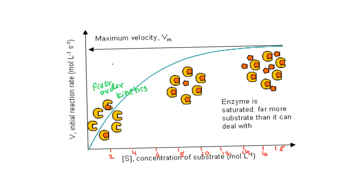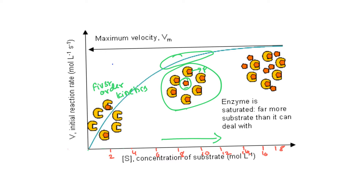Now let's look at the second part of this figure. Here we have six enzymes with their active sites filled with substrate, and one substrate still remaining. We are getting into saturating these enzyme units — there are seven substrates but only six enzymes. All six enzyme active sites are now full, so there is no place for the additional substrate to bind. The curve begins to bend and plateau.